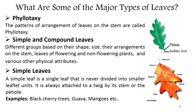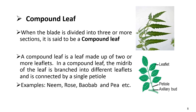Examples of simple leaves are black cherry, guava, and mango. When the blade is divided into three or more sections, it is called a compound leaf. A compound leaf is made up of two or more leaflets. In a compound leaf, the midrib of the leaf is branched into different leaflets and is connected by a single petiole. To identify whether a leaf is simple or compound, observe for a bud node at the base of the petiole attached to the stem. In compound leaves, there is a bud node at the base of the petiole but no bud node at the base of each leaflet. Examples of compound leaves are neem, rose, and pea.